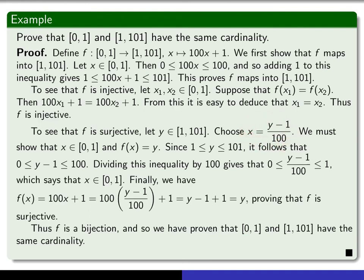And now you've got to do two things. You have to show, first of all, that this number lies between 0 and 1 and that f of it gives you back y. From the fact that y lies between 1 and 101, if you subtract off a 1 and then divide by 100, you get that (y-1)/100 lies between 0 and 1. And that is exactly what it means to say that x is between 0 and 1.